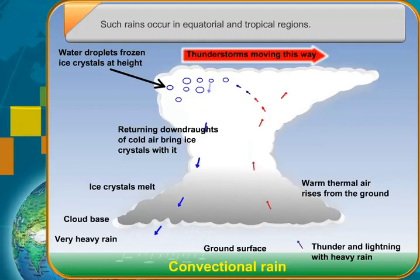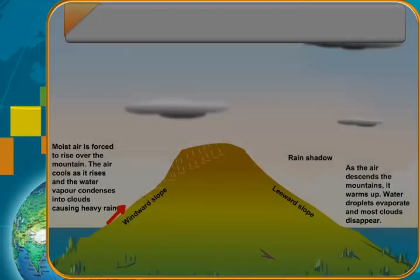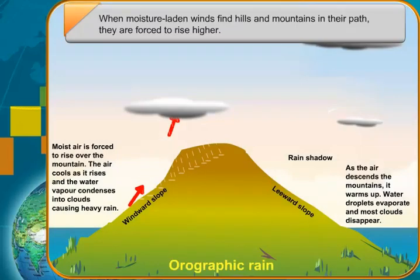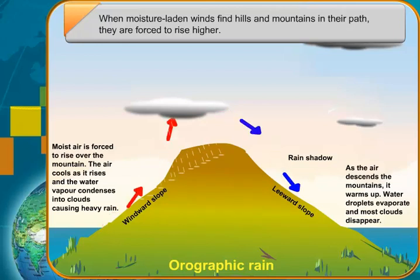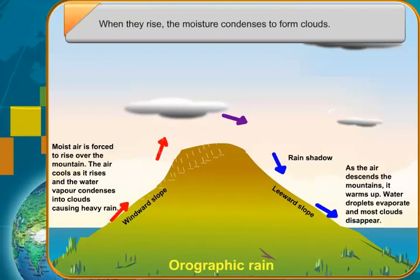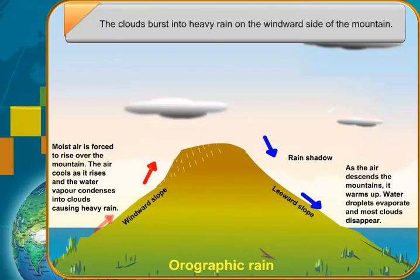When moisture-laden winds find hills and mountains in their path, they are forced to rise higher. When they rise, the moisture condenses to form clouds. The clouds burst into heavy rain on the windward side of the mountain, while the other side of the mountain gets little or no rain.